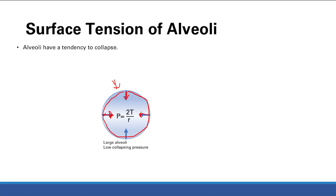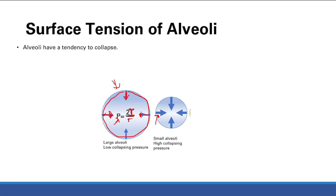The collapsing pressure is defined by Laplace's law: P = 2T/r — two times the surface tension over the radius. As the radius gets smaller, the collapsing pressure gets even bigger. Bigger arrows here represent bigger collapsing pressure because of a smaller radius. The smaller the alveolus collapses, the higher the pressure driving it to collapse further.